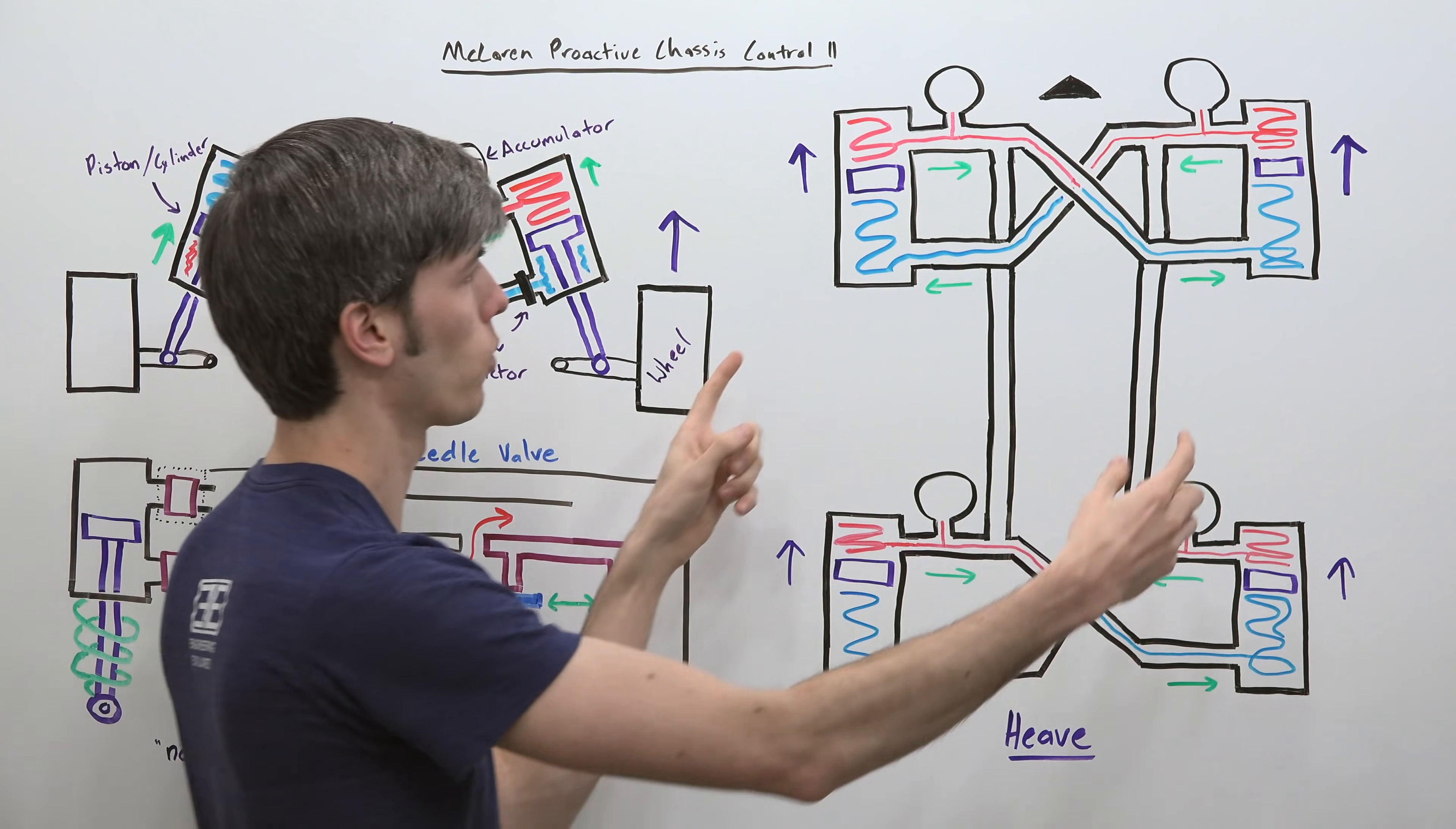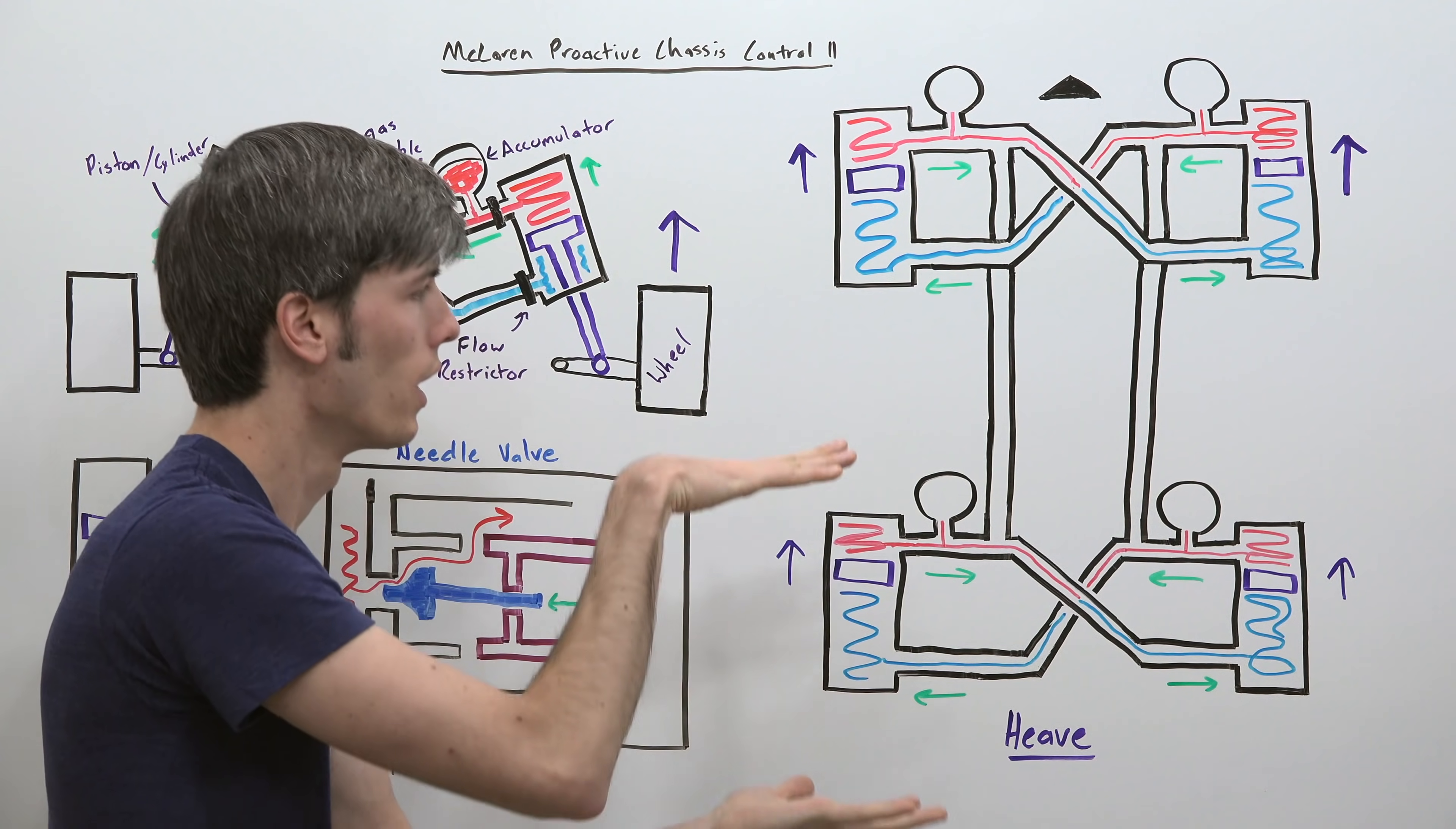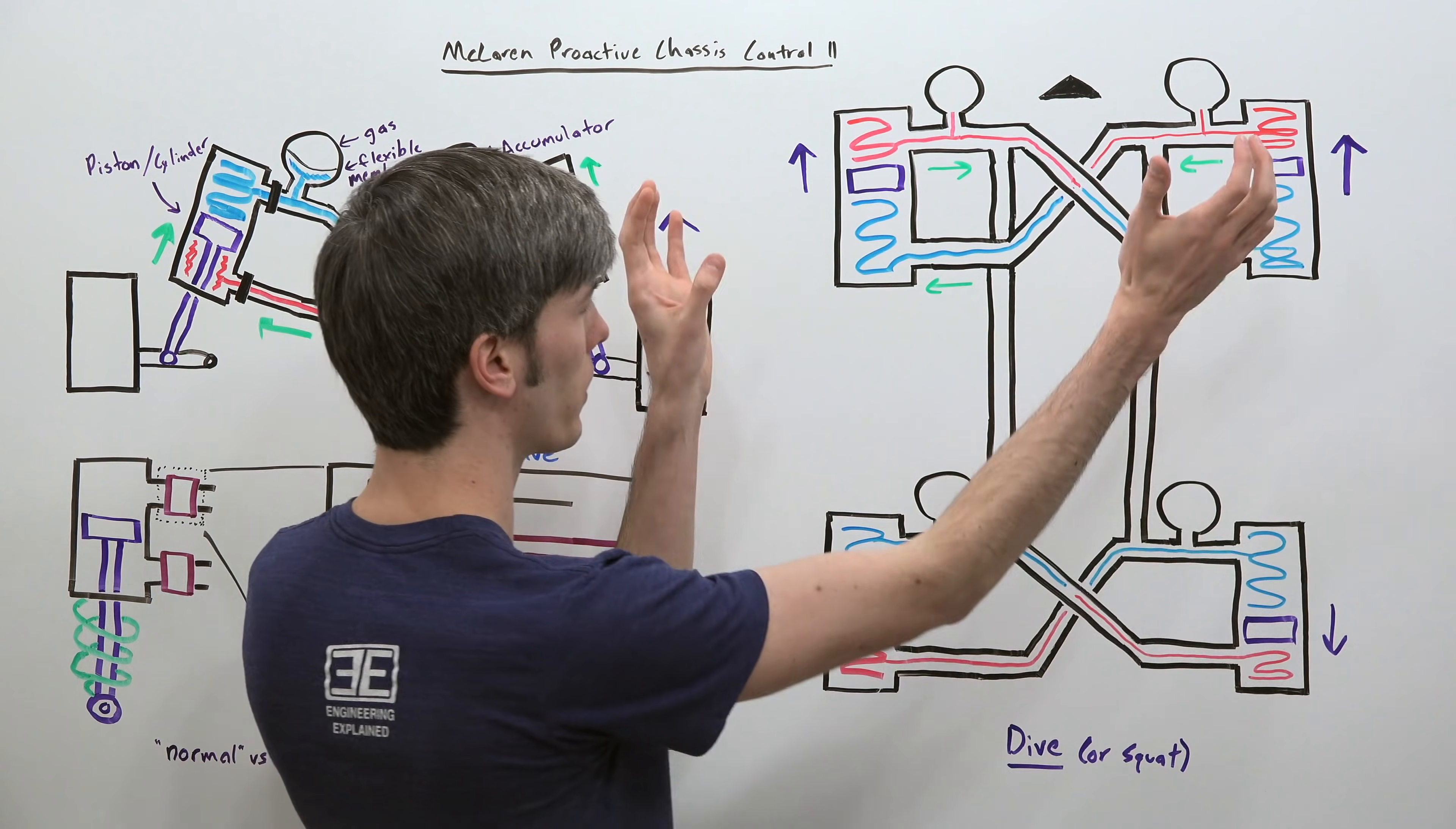So the rate at which you allow that fluid to travel over you can change based on what mode you're in but ultimately you're allowing for that movement, you're allowing for the car to remain compliant. So it's going to give you that comfort aspect of driving as you move over different undulations on a road.